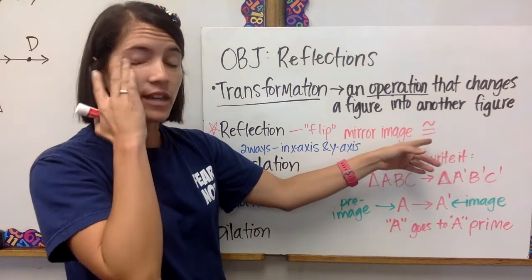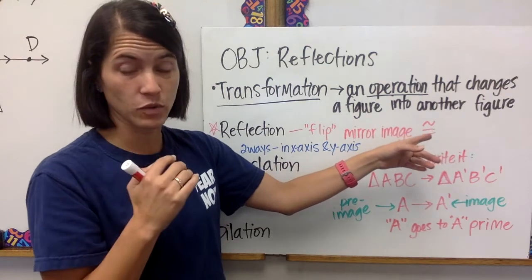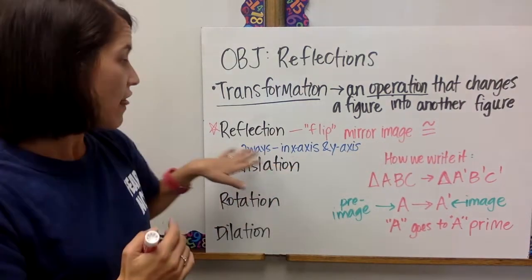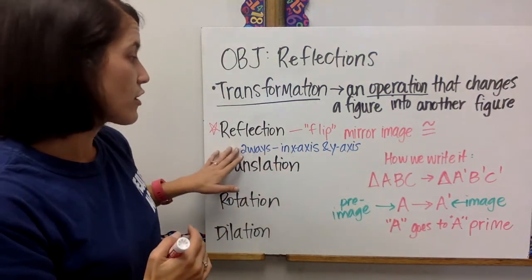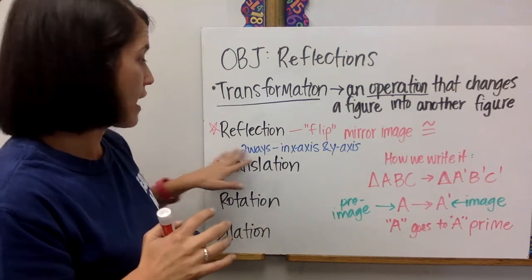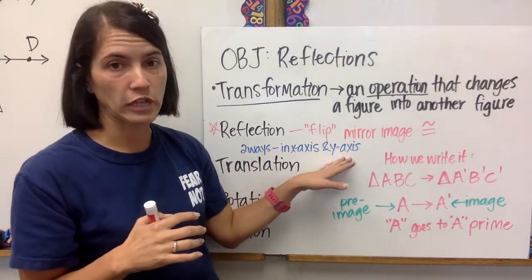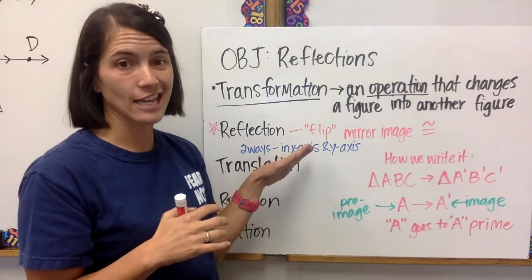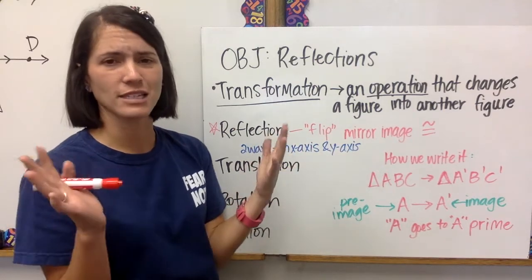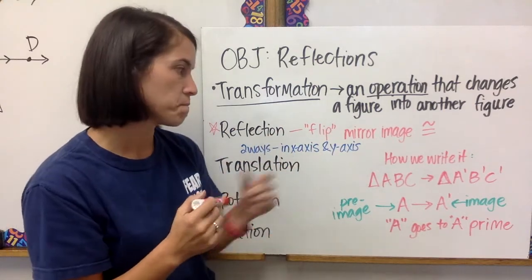So the image and the pre-image will be congruent. The two ways we are going to reflect in eighth grade math are the x-axis and y-axis. So we're going to reflect in the x-axis or in the y-axis, which means across the x-axis or across the y-axis.